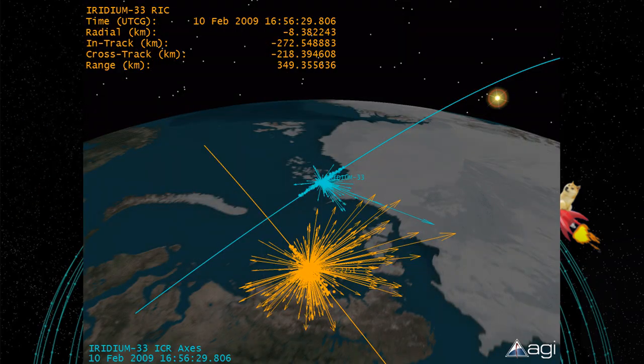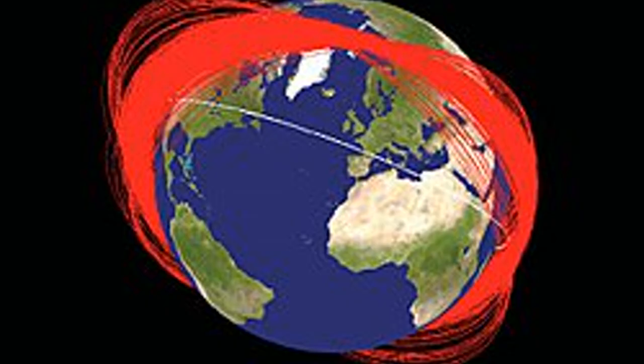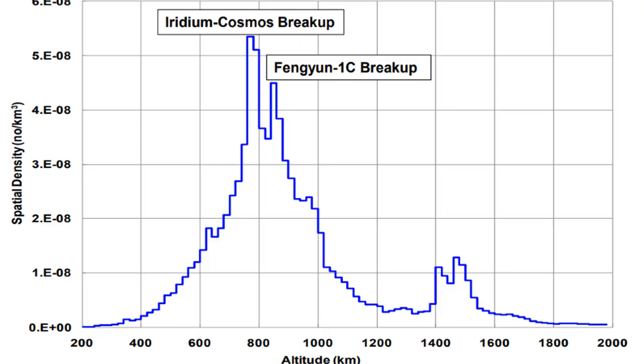But this Russian satellite test that blew up and created debris, it wasn't the first of its kind. The US and other nations have done these before, which I don't condone. And there have also been large satellite collisions and breakups before, such as the Iridium Cosmos breakup and the Fangun 1C breakup. And these two breakups are some of the biggest causes of space debris at certain altitudes, as you can see on this chart.